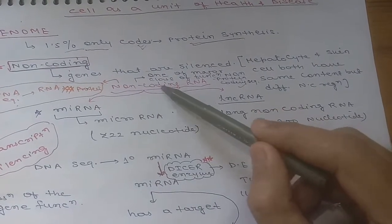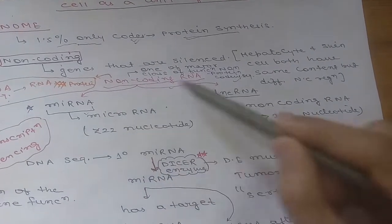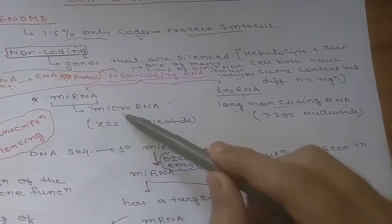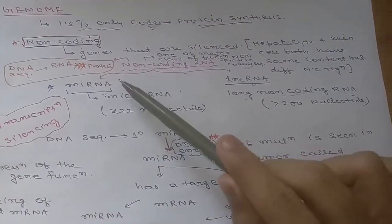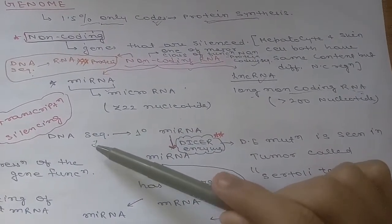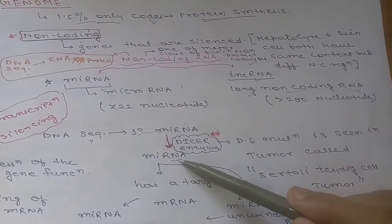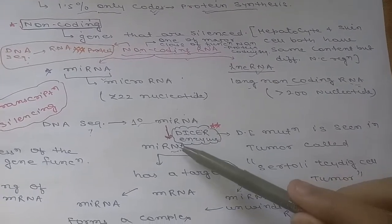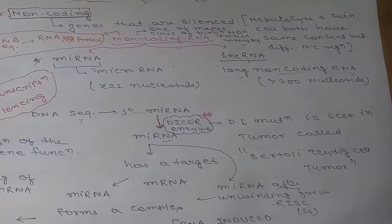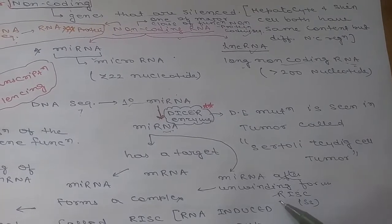Two important non-coding RNAs are miRNA (microRNA) and lncRNA (long non-coding RNA). Focusing on miRNA: the DNA sequence undergoes transcription to form primary miRNA, which is then converted into mature miRNA by the Dicer enzyme. After unwinding into a single strand, miRNA combines with a multi-protein complex to form RISC, the RNA-induced silencing complex.